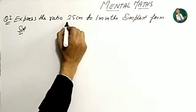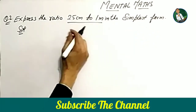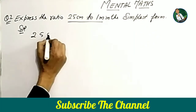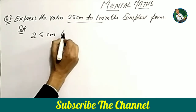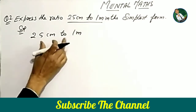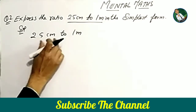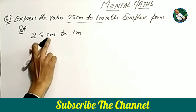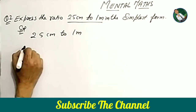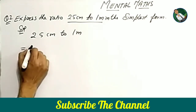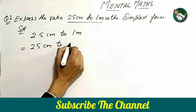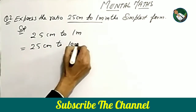Question number two: express the ratio 25 centimeters to one meter in the simplest form. We look at 25 centimeters to one meter. According to the criteria, the units must be the same, so we will change one meter to centimeters. We write 25 centimeters to 100 centimeters.